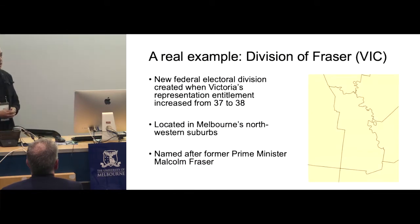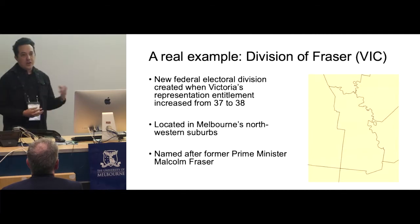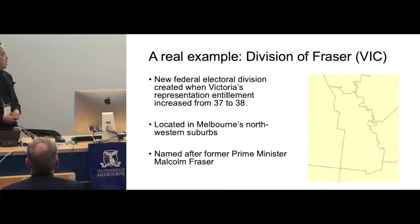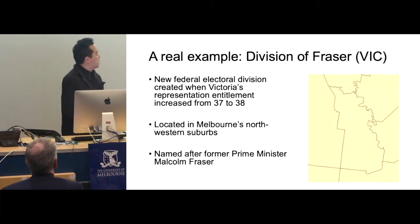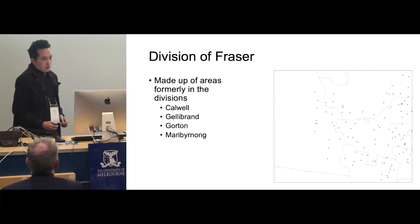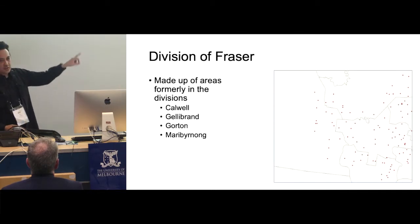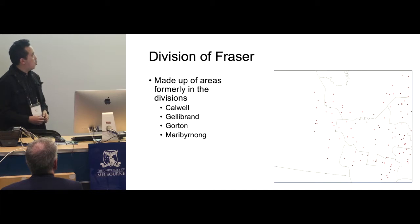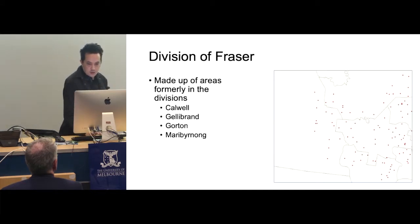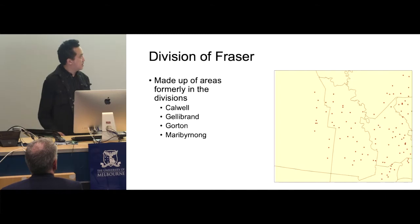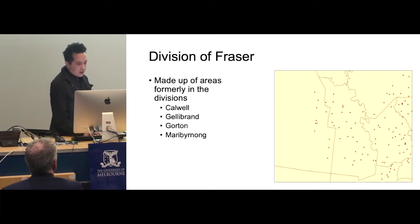As I mentioned, in the change in representation entitlement, Victoria gained an extra seat. That seat is the Division of Fraser, which will be used in the next federal election. Victoria went from 37 to 38 seats. It's in Melbourne's northwestern suburbs and it's named after former Prime Minister Malcolm Fraser. This is a map of the old divisions and the dots of the polling places used at the last election — parts of Caldwell, Gillibrand, Gorton, and Maribyrnong. And here is where Fraser now sits — parts of those four electoral divisions have become what is now Fraser.